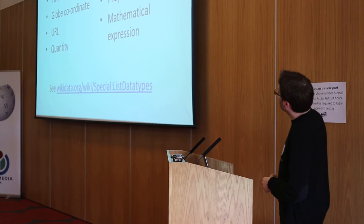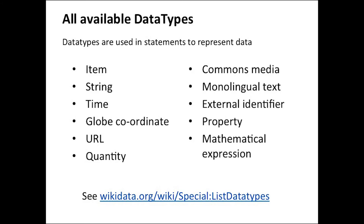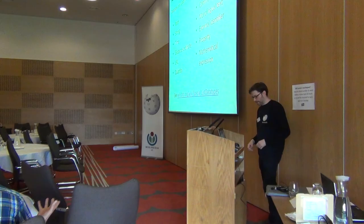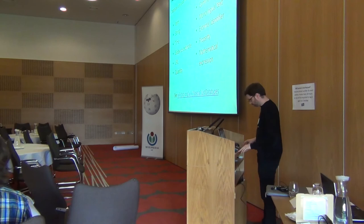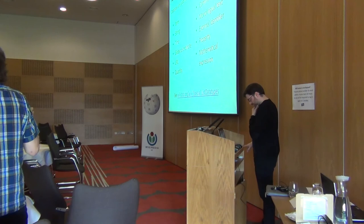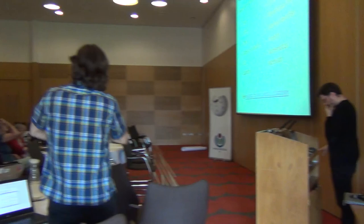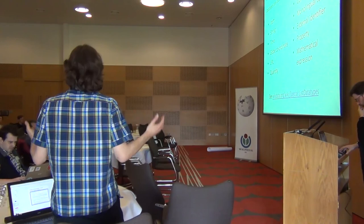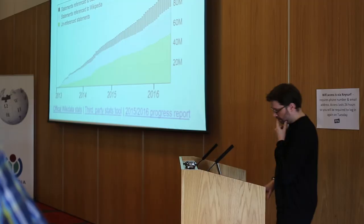There are many different data types: times, globe coordinates, items — and many others such as strings, commons media, property, mathematical expression, and quantities. For anyone familiar with databases, you need these to describe the world in different ways. The 'item' type is one of the most important — place of birth isn't just text, it's Cambridge as a linked item, showing how one item leads to another and creates an entire network of how the whole of Wikidata is connected. All the other types are equally important; you cannot really describe the world without them.